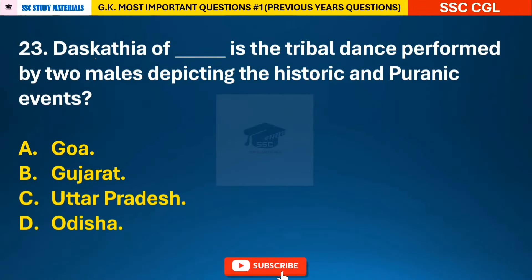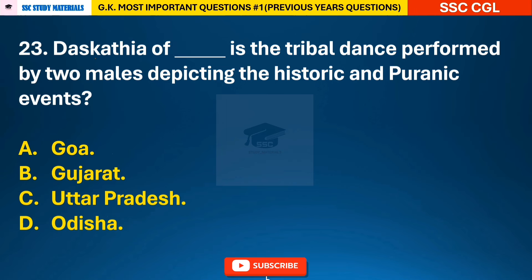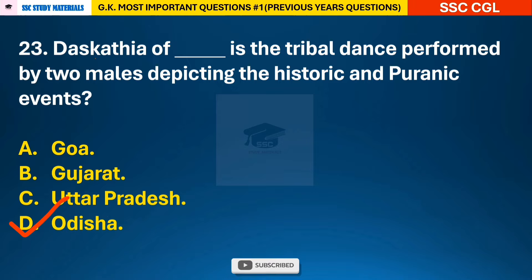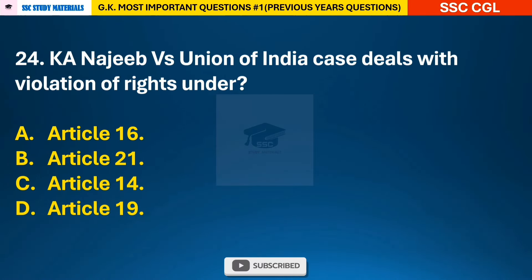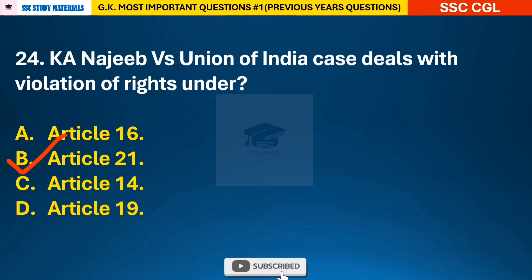Question 23: Das Katia of Dash is the tribal dance performed by two males depicting historic and Pyrrhic events — answer D: Das Katia is the tribal dance of Odisha. Question 24: K.A. Najib vs Union of India case deals with violation of rights under — answer B: Article 21.